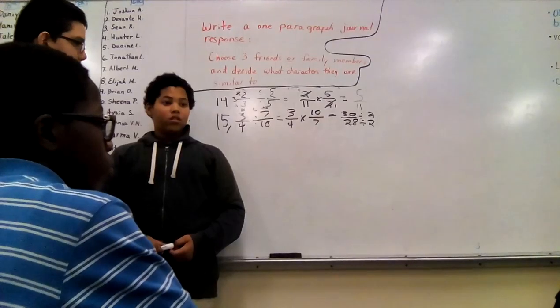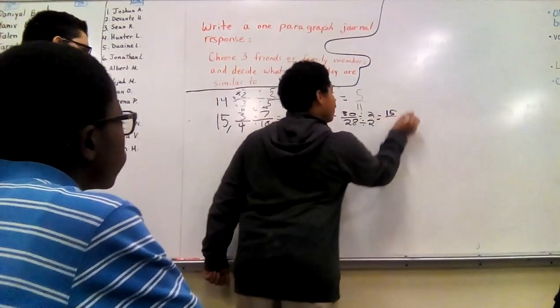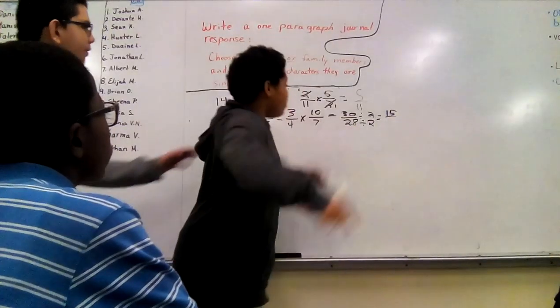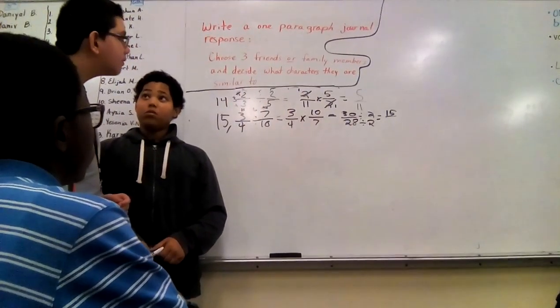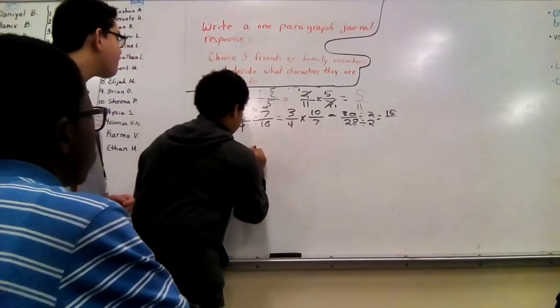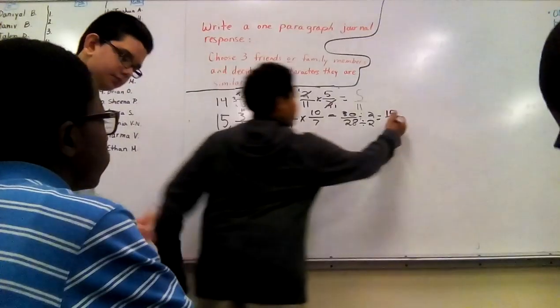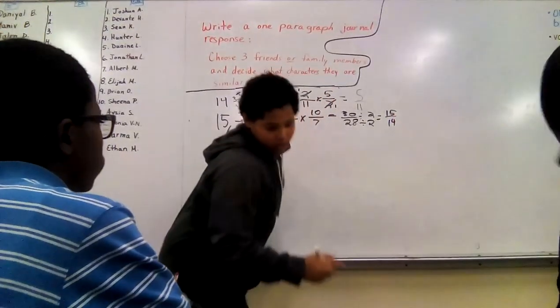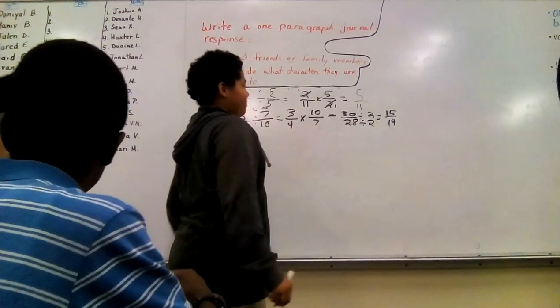So now 28 divided by 2. So 28 divided by 2 is... Is 30 correct? Correct? So someone said. So 28 divided by 2. 14? Be sure. 14.